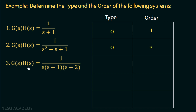Example 3: G(s)H(s) = 1 / [s(s+1)(s+2)]. This transfer function has one pole at the origin, so the type is 1 — a type one system. The order is three because multiplying all the factors of s gives a highest power of s³ in the denominator, so the order equals three.